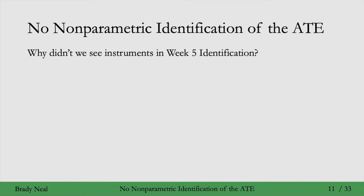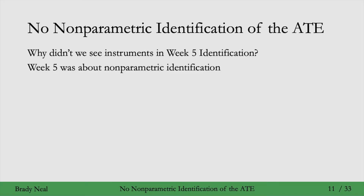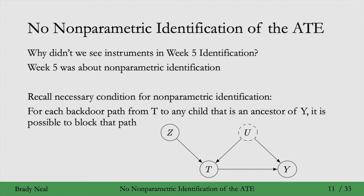So why didn't we see instruments in week 5 when we were looking at identification? Well, the answer is that week 5 was about non-parametric identification, where we don't make any assumptions about the structural equations or the causal mechanisms that generate the variables. If you recall, in that week we saw a necessary condition for non-parametric identification.